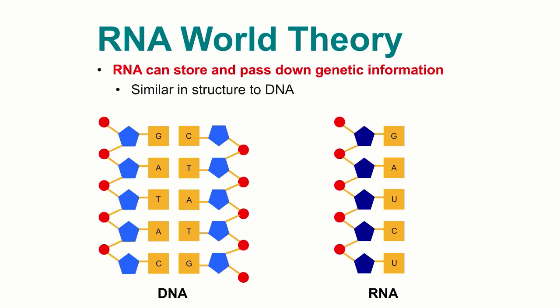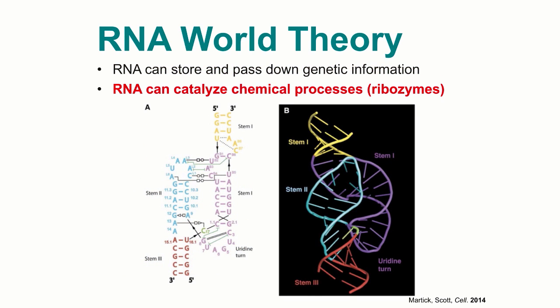The RNA world theory of the origin of life proposes that RNA can accomplish the same function as DNA, as it can store and pass down genetic information, because it is very similar in structure to DNA — both DNA and RNA are made up of four different nitrogenous bases that can hydrogen bond to a complementary base. RNA can also take the function of proteins, in that it can catalyze certain chemical processes when specific sequences of RNA are folded into complex tertiary structures.